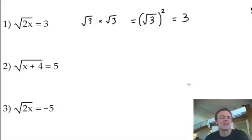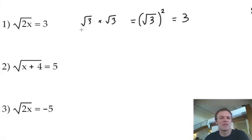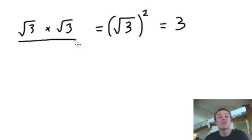Okay, so solve radical equations. Remember these rules from previous videos. Root 3 times root 3 is going to give us 3. In other words, it's root 3 squared. So if I square the square root of 3, I'll just get the 3. It's kind of like these two things have cancelled each other out.